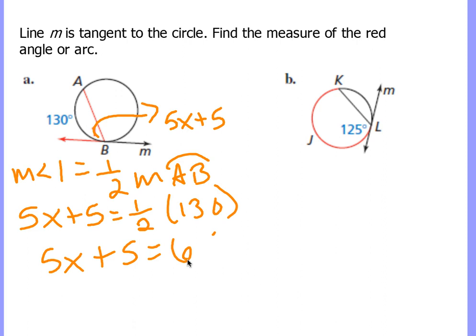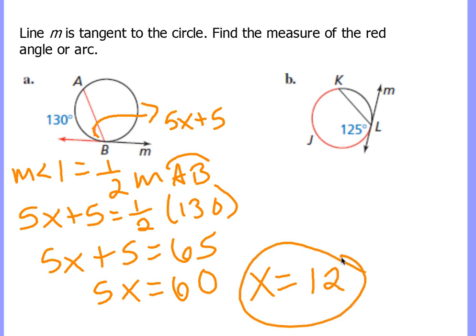And five x equals 60, and then of course x would equal 12 in this particular example. Maybe they would say, hey, substitute it back in to find the measure of angle 1. It just depends on what the scenario actually is.